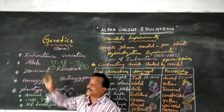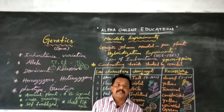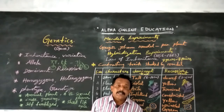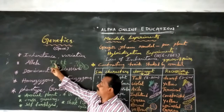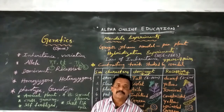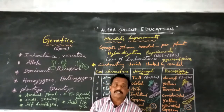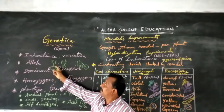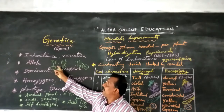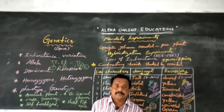Next, let's come to alleles. Alleles means the two alternative forms of a gene — that is called alleles. So, this is one type of allele and this is another type of allele. That is capital T, capital T — this is one type of allele. Small t, small t — this is another type of allele.